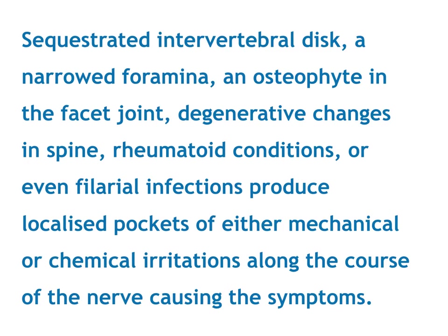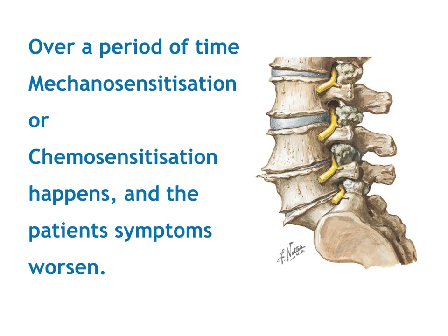A sequestrated intervertebral disc, a narrow foramina, an osteophyte in the facet joint, degenerative changes in the spine, rheumatoid conditions, or even filarial conditions will produce localized pockets of mechanical or chemical irritation along the course of the nerve causing symptoms. Over a period of time, mechanosensitization or chemosensitization occurs and the symptoms persist and worsen.